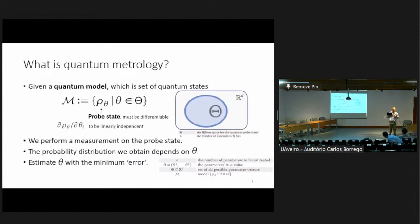We are interested in this abstract setting of quantum metrology, where you are given a set of probe states — just quantum states. Inside these quantum states is embedded a parameter vector theta, which is a real vector with d components. d greater than 1 corresponds to the multi-parameter setting; in a previous talk d equals 1 was considered, but here d is greater than 1 in general.